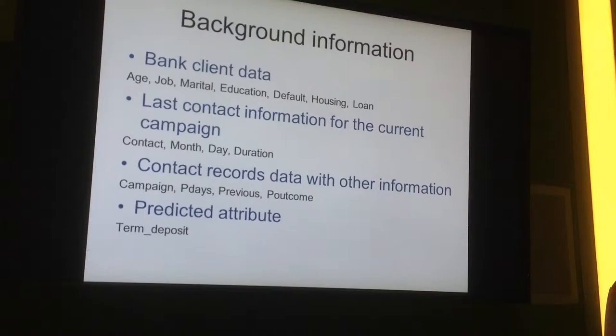And the third big part is the contact record data with other information, which contains the campaign—the number of contacts for this customer—P days, Previous—the number of contacts for this contact—and P outcome, the result of the last contact.